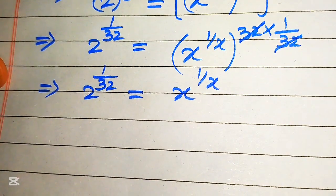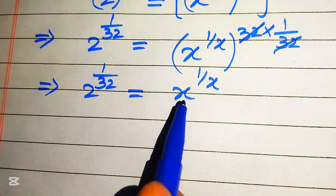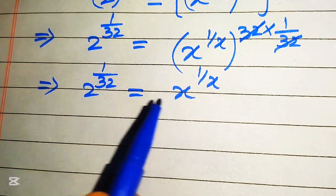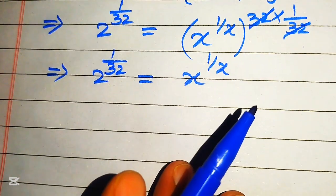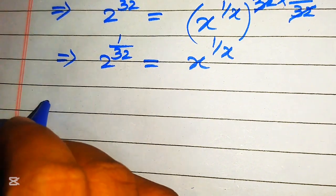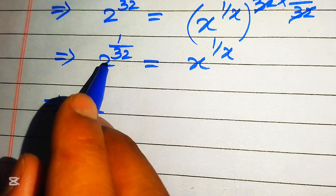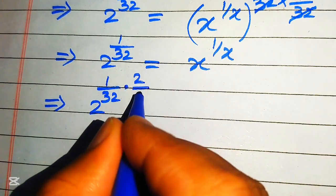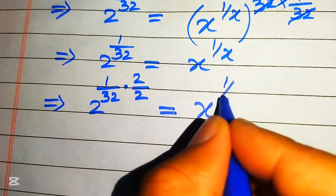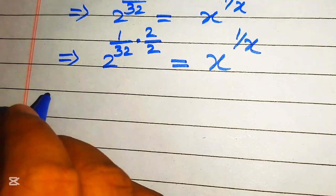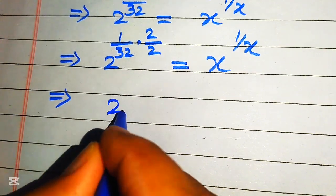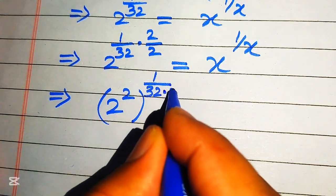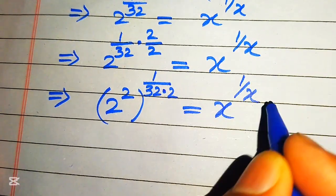On the right hand side the exponent is the reciprocal of its base. We need to make the same condition on the left hand side. To do this, we multiply and divide the exponent of 2 by 2, writing it as 2 over 2 times 1 over 32. We then move this 2 inside the term, giving us 2 squared, whole raised to 1 over 64, equals x to the power of 1 over x.